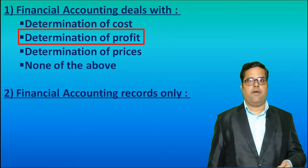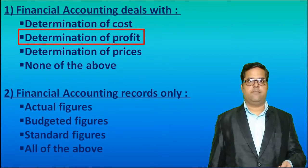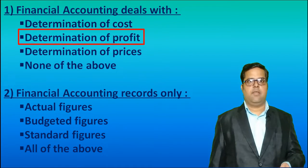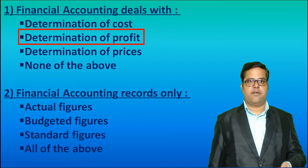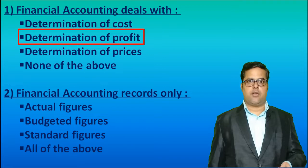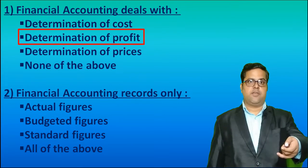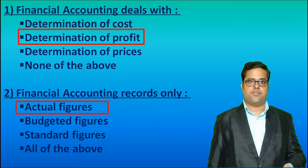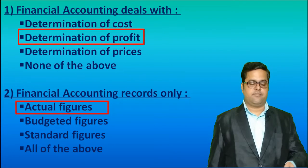Second, Financial Accounting records only — options are: Actual Figures, Budgeted Figures, Standard Figures, All of the above. Financial Accounting is Historical Accounting, that is, it records only Actual Figures. So, the answer is Actual Figures.